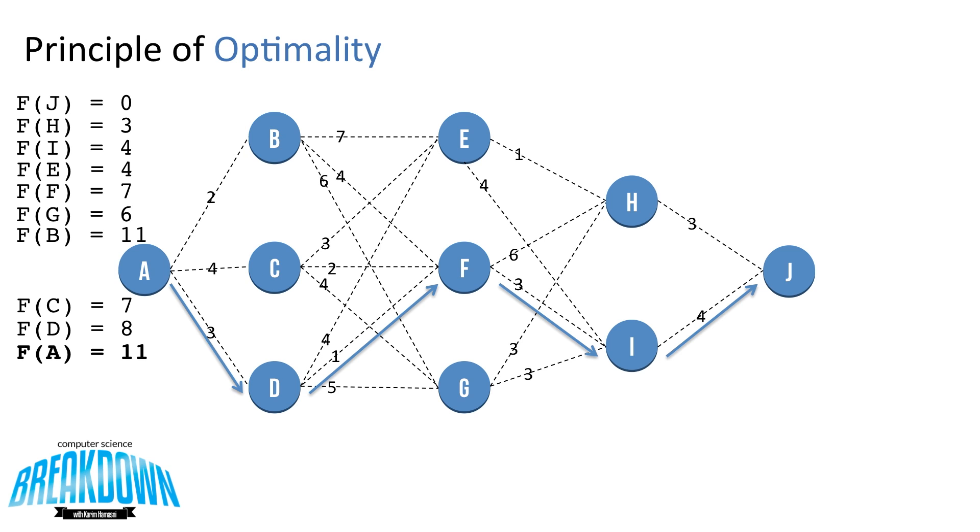But this problem actually has another solution that has a path cost of 11. A to D, D to E, E to H, and H to J.